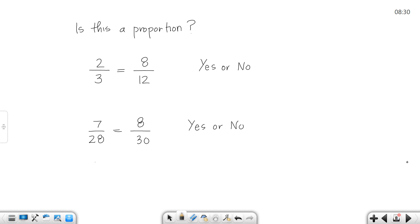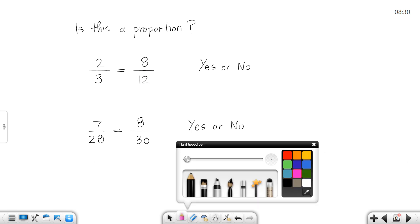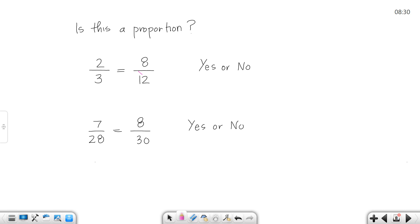So I ask you in this first one, is this a proportion, yes or no? First of all, you can reduce them. If they reduce to give you the same number, of course it is a proportion. But you can also do it this way. If I multiply across this diagonal, 2 times 12 is 24. If I multiply across this diagonal, 3 times 8 is 24. So since they are equal, this is a proportion.